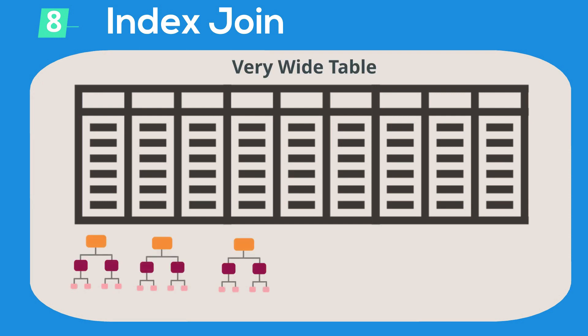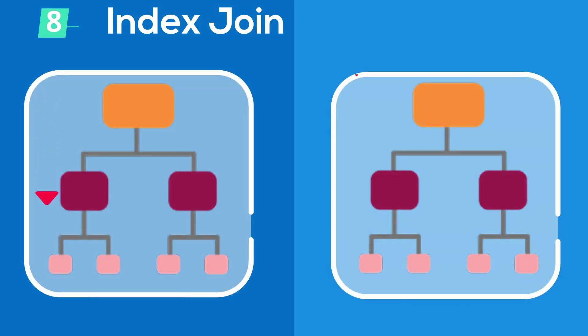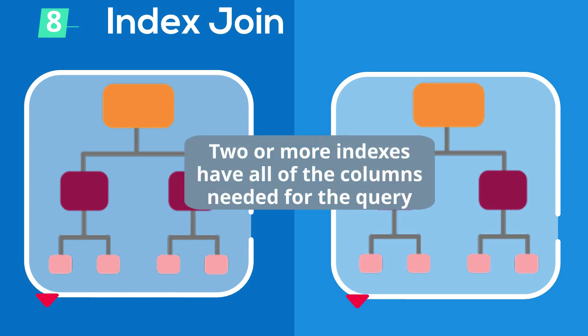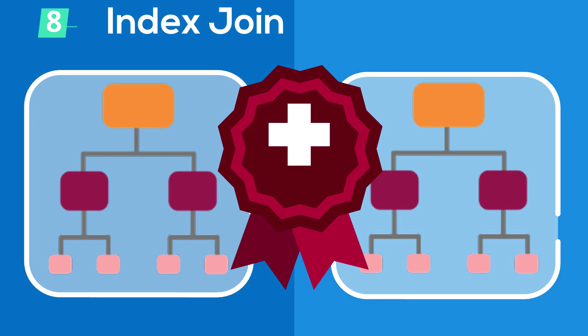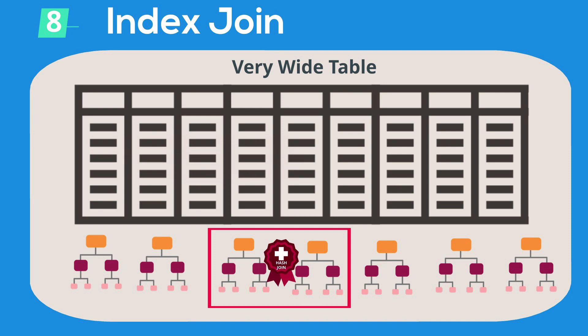An index join happens when you have a very wide table with multiple indexes on it, and two or more of those indexes together accommodate all of the columns you're looking for. It's more efficient to scan two of these indexes and hash join them together to get the result set rather than scanning the entire table. It's less common, but it does occur with very wide and very large tables.